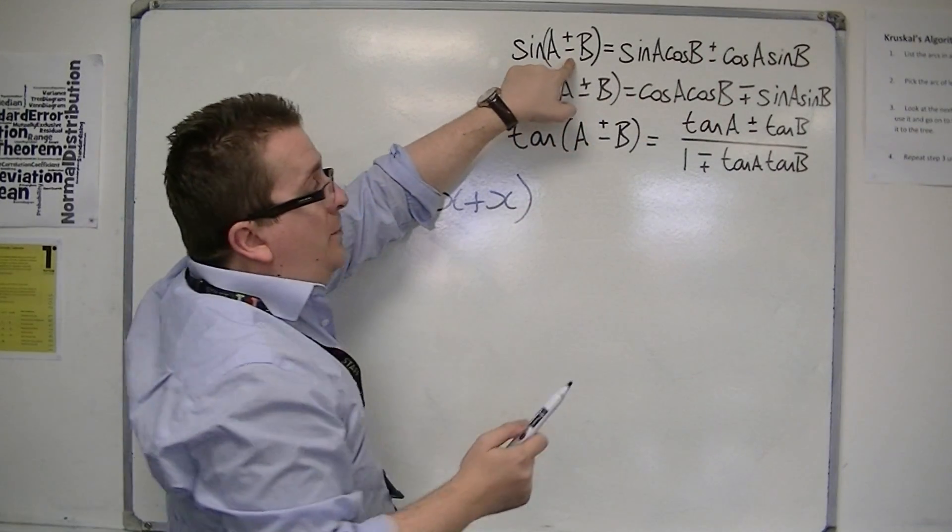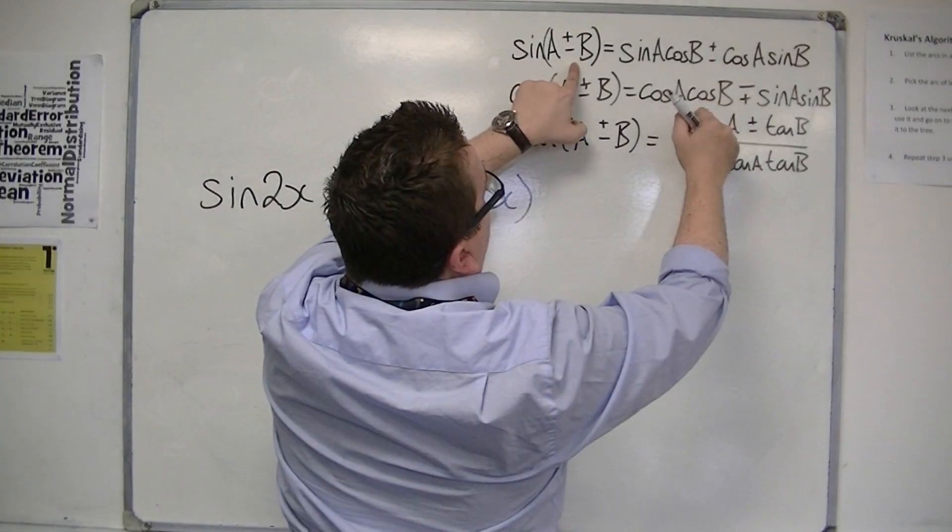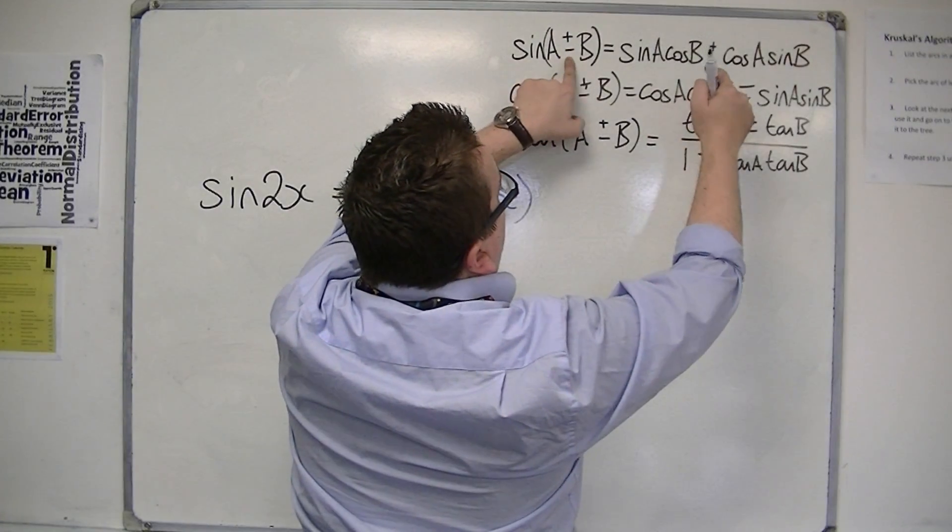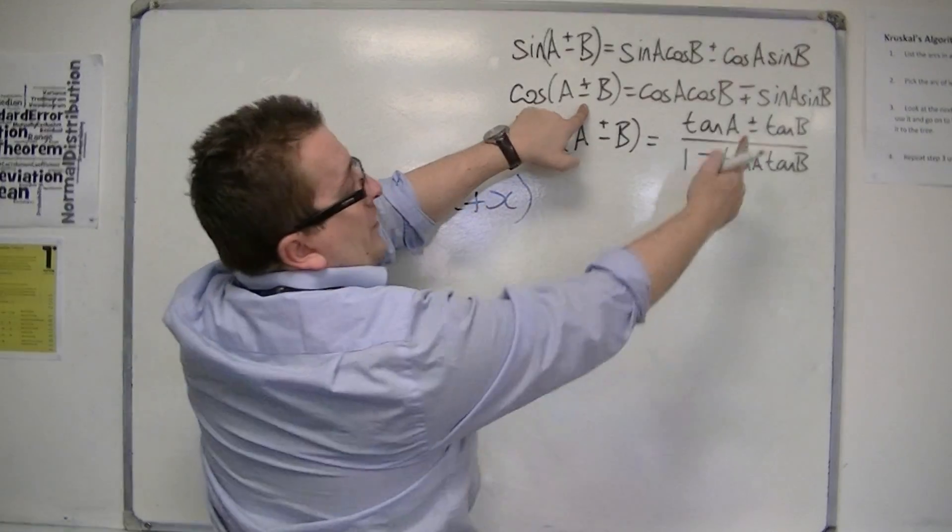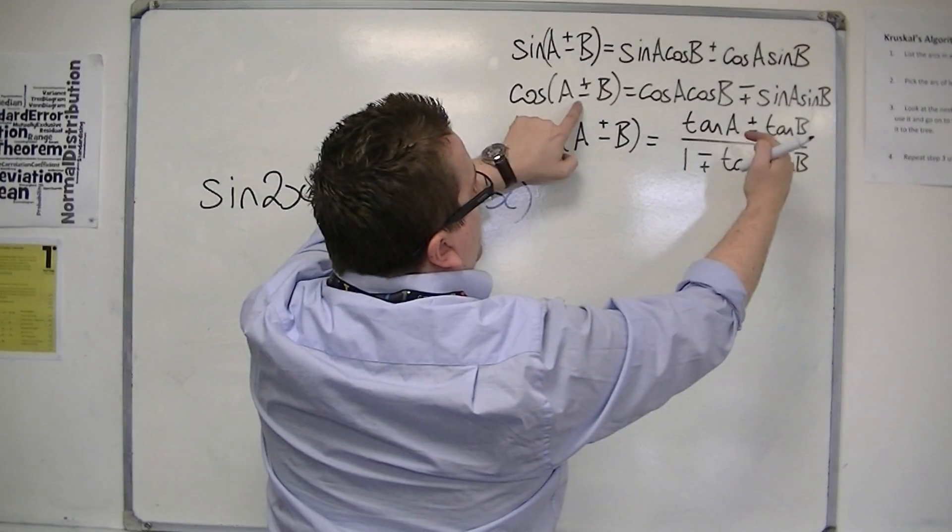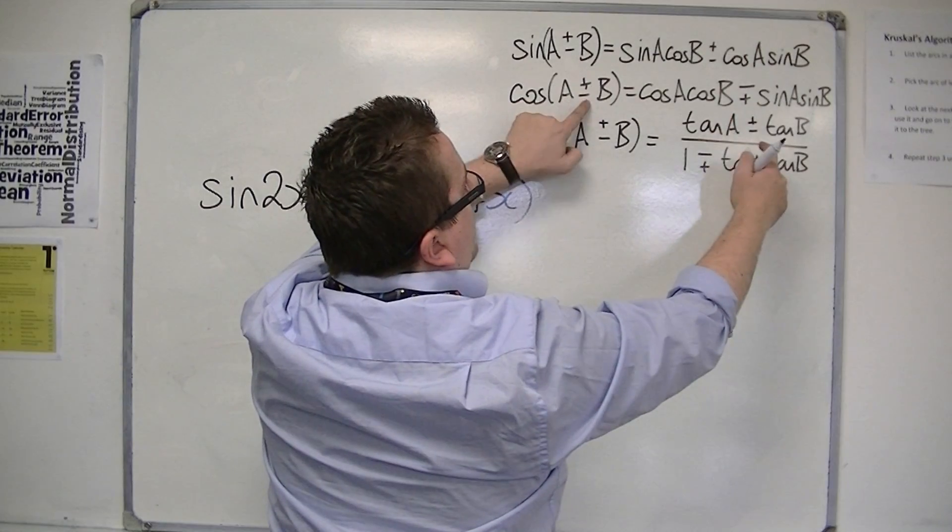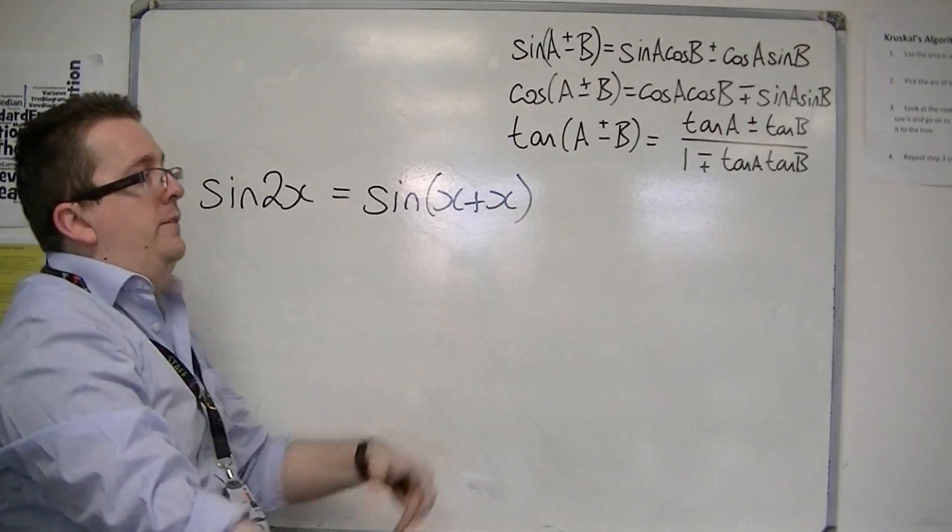So we'd have to have a plus there. The whole point here is that we've got a plus minus and a plus minus, so when that is plus, that is plus. When that is minus, that is minus. Unlike here, where we've got plus minus, minus plus. If that's plus, that's minus. If that's minus, then that's plus. So that's how it works.